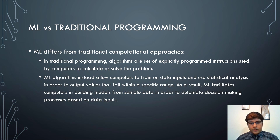In traditional programming there are exact algorithms to solve the problem, whereas machine learning algorithms allow computers to train on data inputs and use statistical analysis to produce output values within a specific range. Given a set of data, a machine learning algorithm can predict the output the model is required to give. These models help individuals and organizations make better decisions.